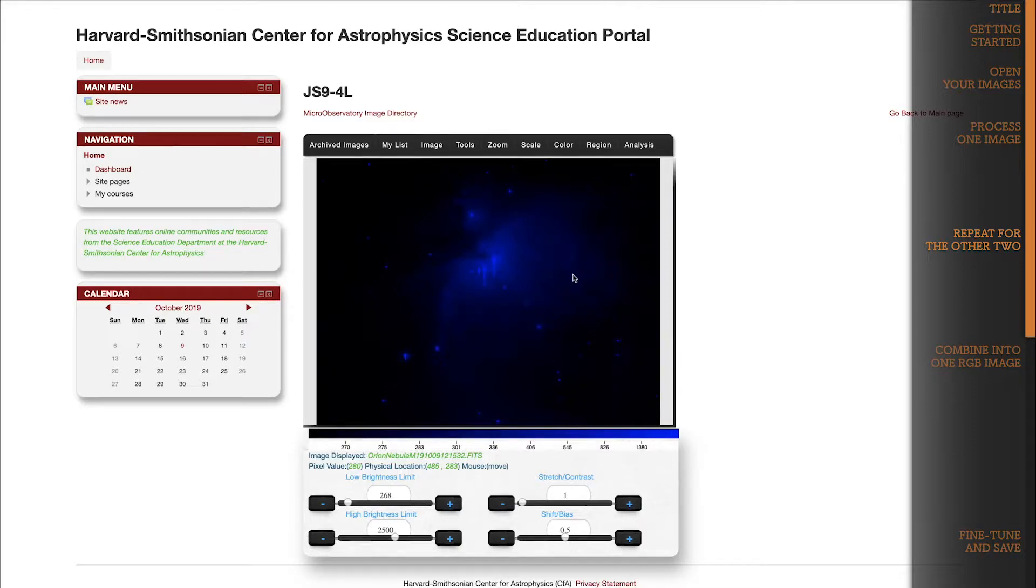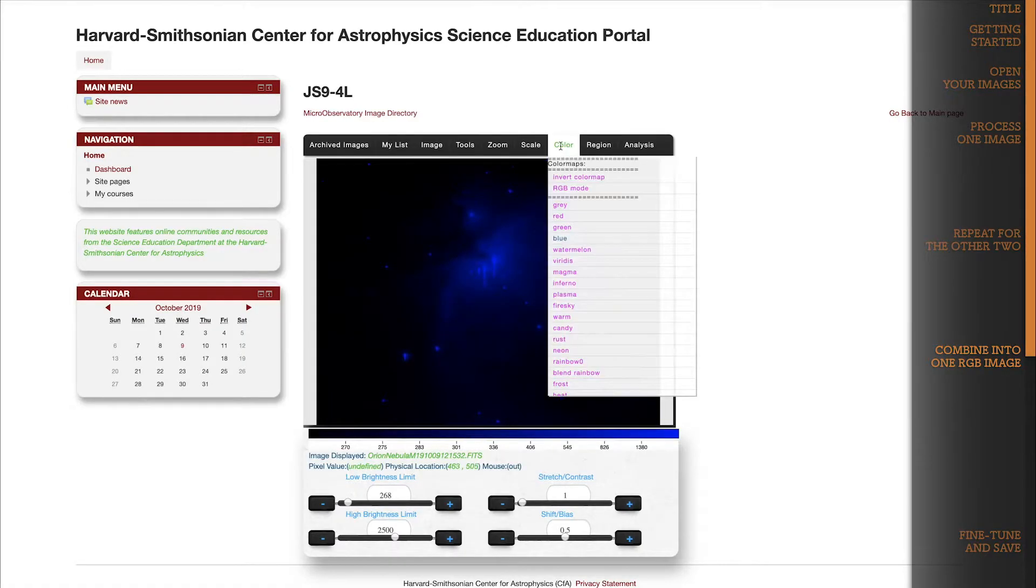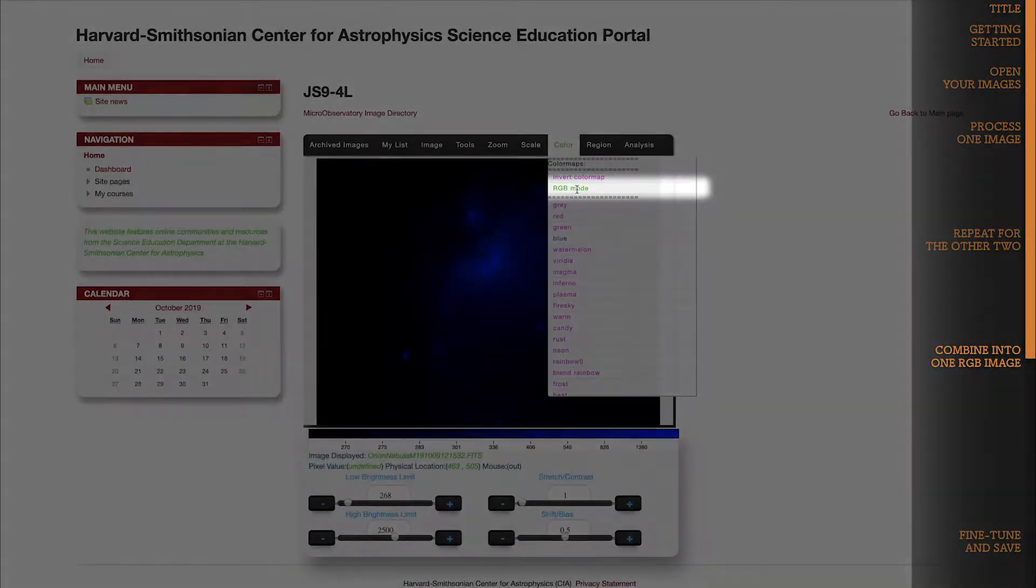And with three processed and colored images, we're ready to combine them into one true color RGB image. A true color image aims to capture the natural optical color of an object in space. That requires combining all three images into one image so that you can see all three layers at once. To do that, go back to the color dropdown and select RGB mode.